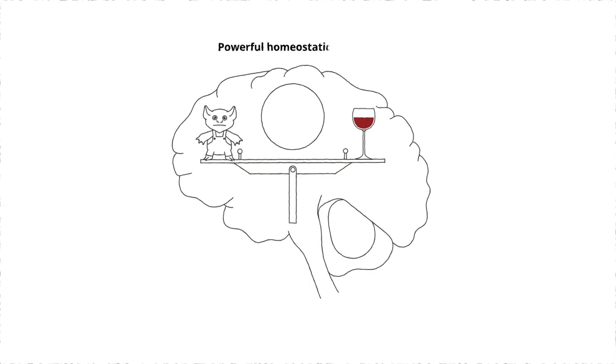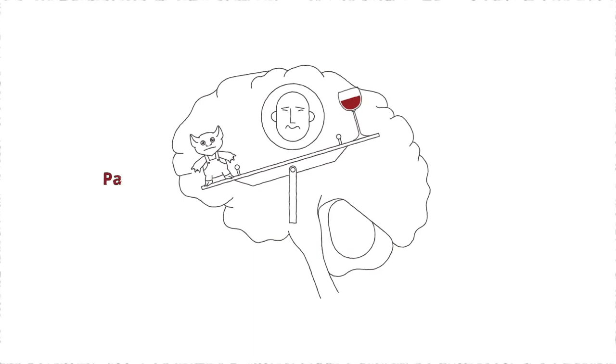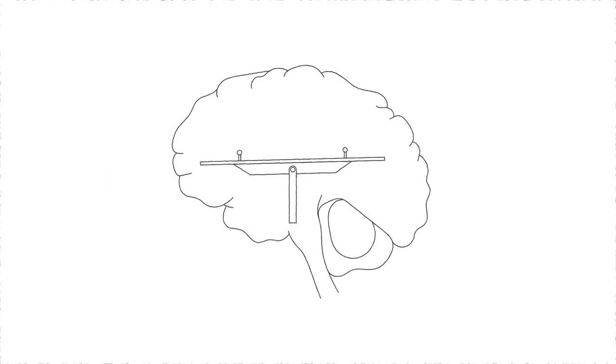Once the balance is level, it doesn't stop there. Instead, it tips an equal and opposite amount to the side of pain. I tend to imagine this as little gremlins hopping on the pain side of the balance, playing there for a while, then hopping off to allow the balance to return to the level position.